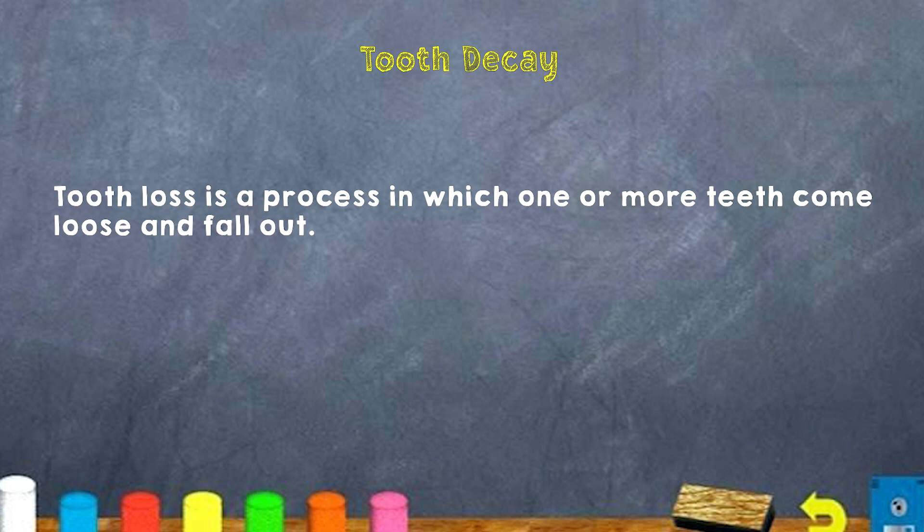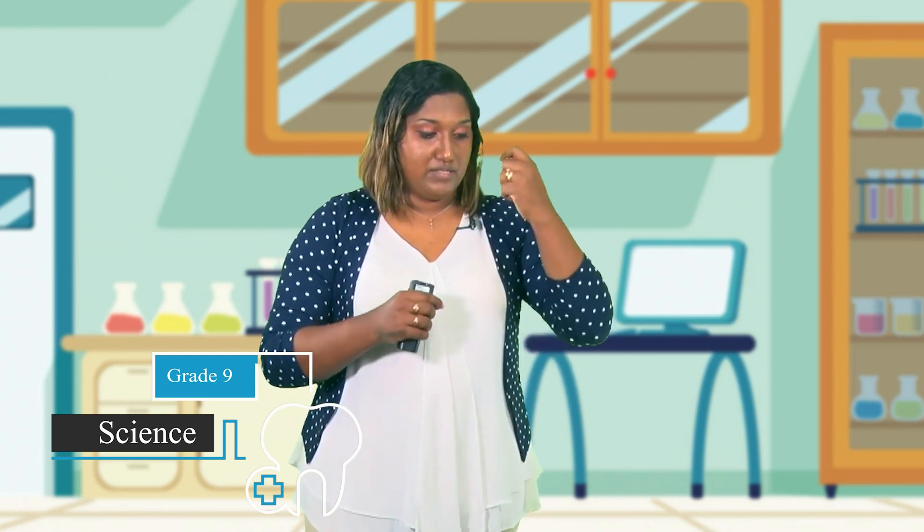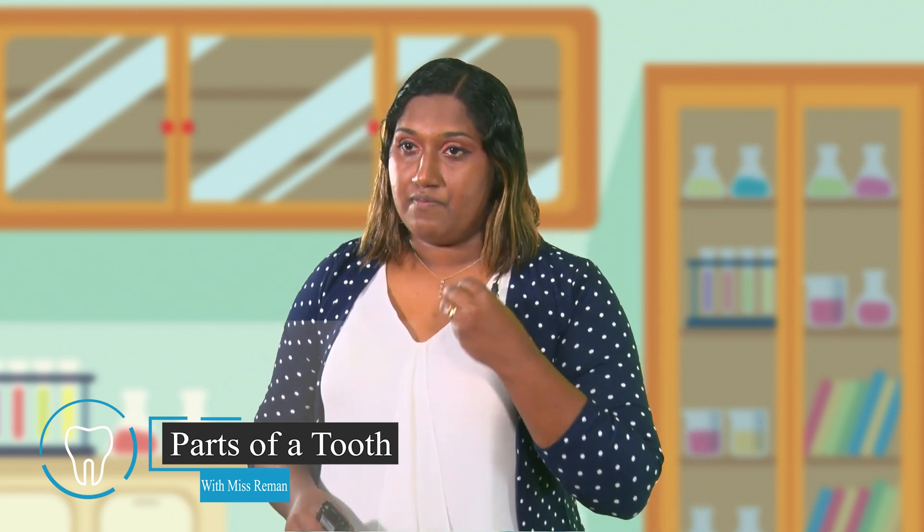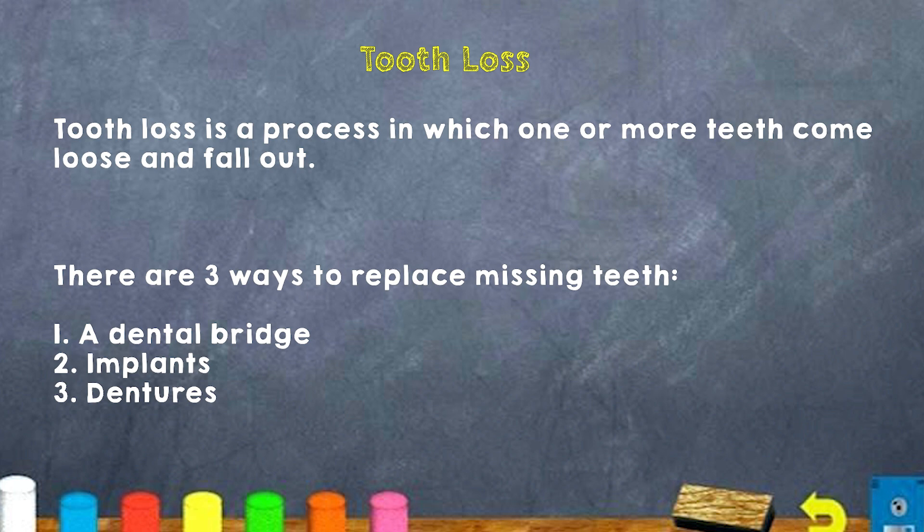We also have what is called tooth loss — the process in which one or more of your teeth come loose and fall out. Growing as a child, you may have tied a string on a tooth and yanked it out, or had a sibling tie it to a doorknob. Every person goes through some tooth loss because you lose your baby teeth to get your permanent teeth. In the case of losing your permanent teeth, there are three ways to replace a missing tooth: a dental bridge, implants, and dentures.